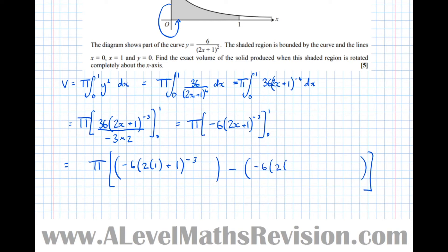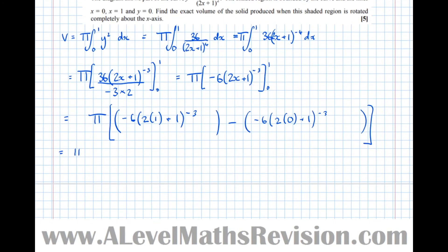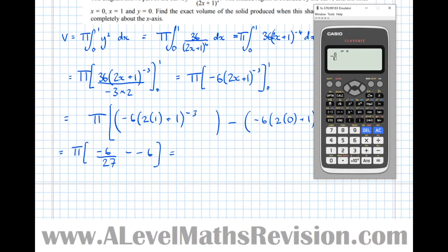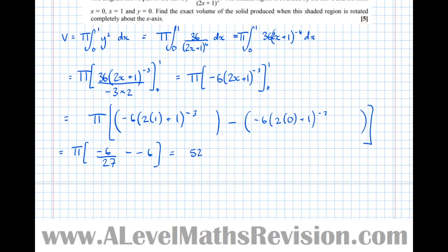I almost forgot there, you shouldn't. Minus 6, 2 lots of 0 plus 1 to the minus 3 equals pi times, and then we've got 2 plus 1 to the minus 3. So minus 6 over, and 3 to the minus 3 is 27. Take minus 6 equals, so let's just put that in the calculator. Minus 6 over 27 minus minus 6 times pi is 52 ninths pi. So there we have it. We found the volume of a solid form when rotating around the x-axis.